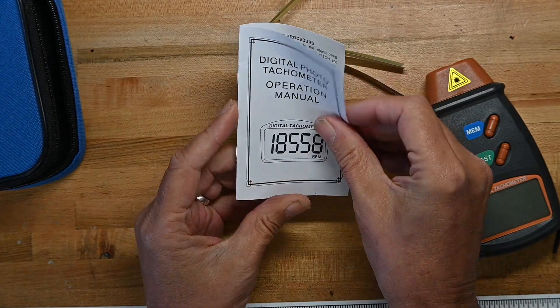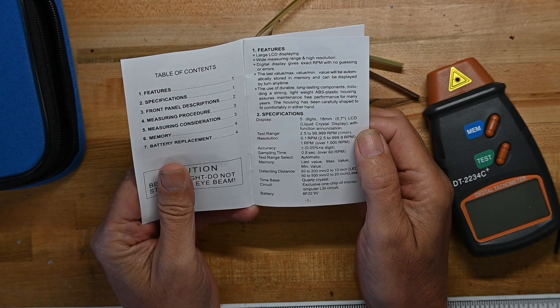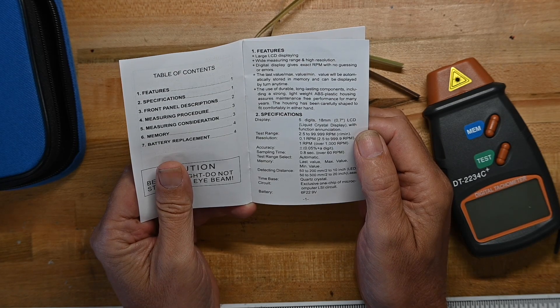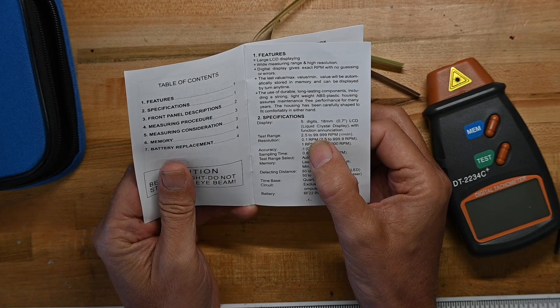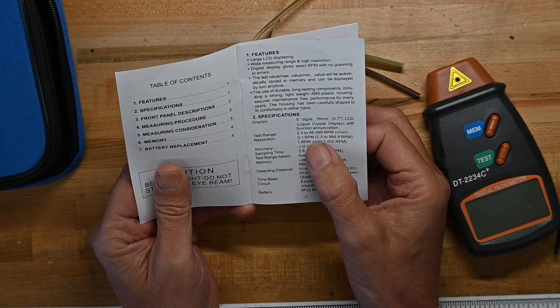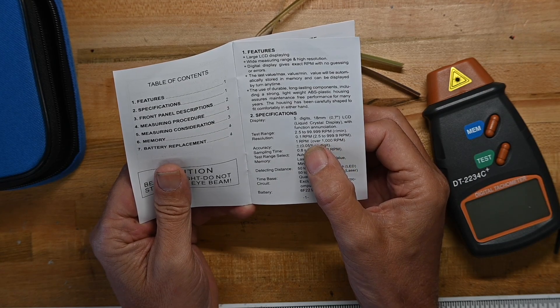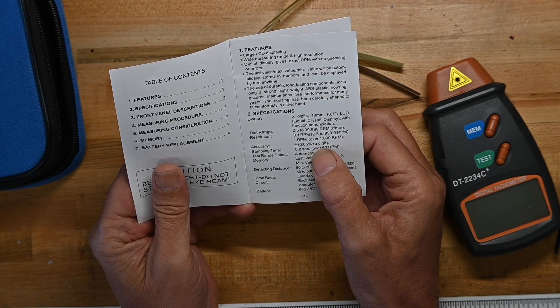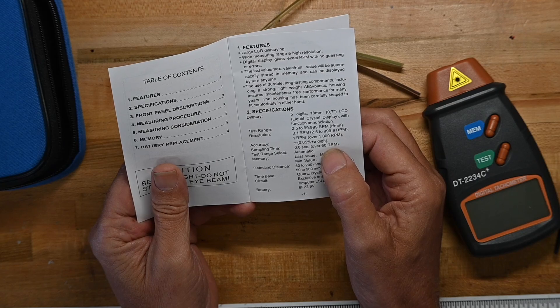Digital tach operation manual. Features: test range 2.5 to 99,999 - I think that's for those of us in the U.S., that would be a comma there, so that's 99,000 RPM maximum. Resolution is a tenth of an RPM up to a thousand RPM, and then one RPM over a thousand RPM. Accuracy is 0.05% of a digit. Samples every eighth of a second over 60 RPM.